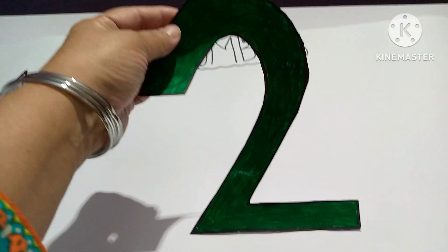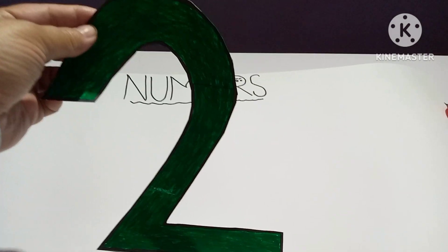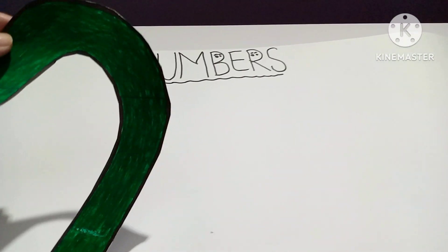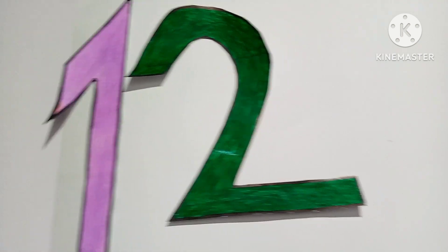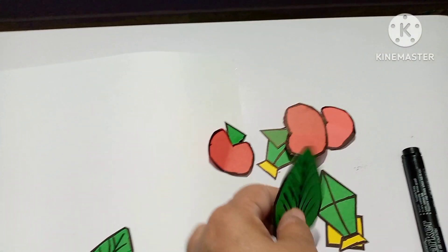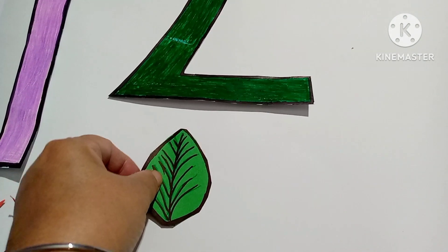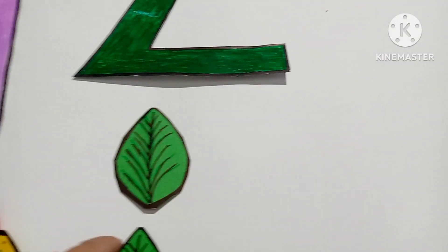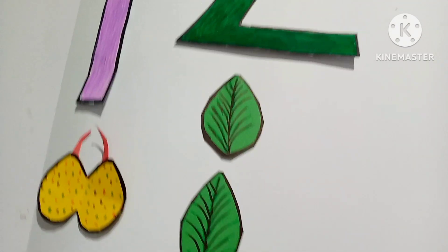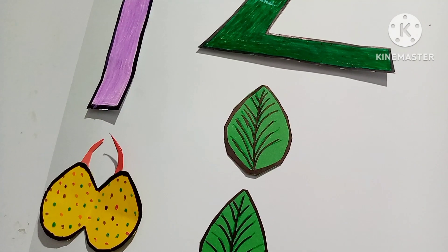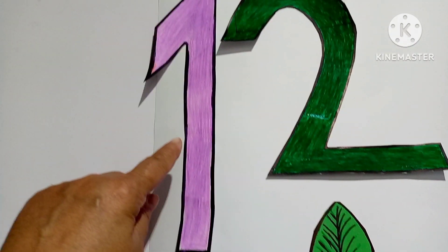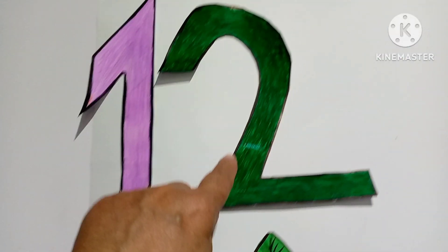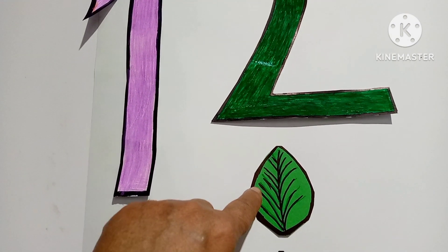Number one. Next, number two. This is number two. There are two leaves — one and two. Count: one leaf, two leaf. There are two leaves.